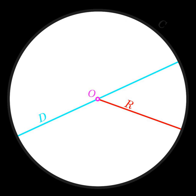See also: Unit disc, a disc with radius 1. Annulus, the region between two concentric circles. Ball, the usual term for the three-dimensional analogue of a disc. Disc algebra, a space of functions on a disc. Orthocentroidal disc,